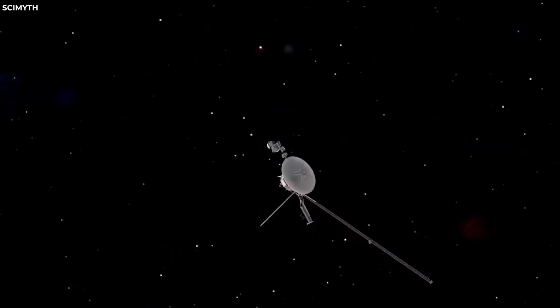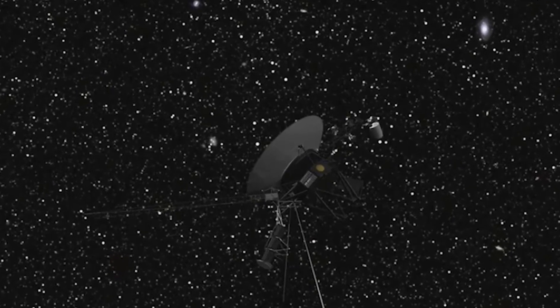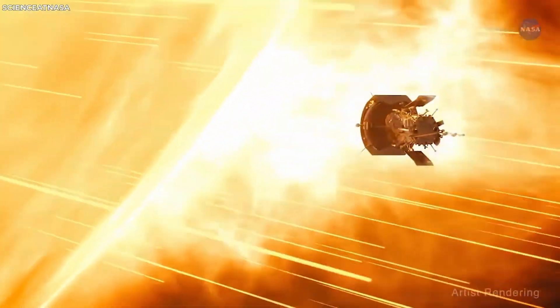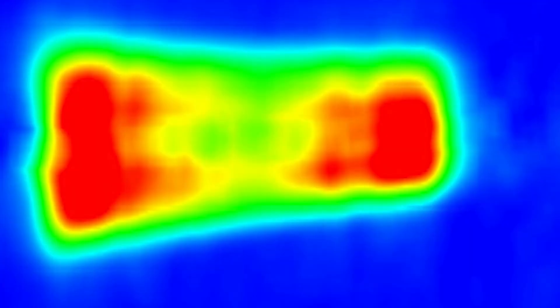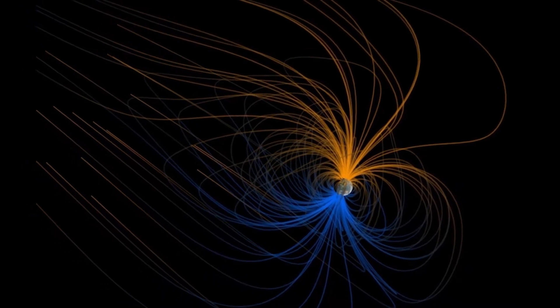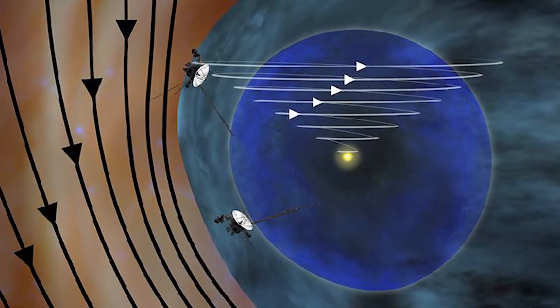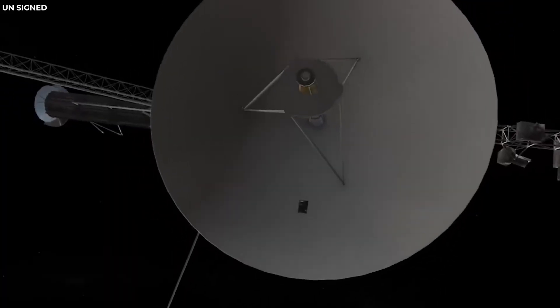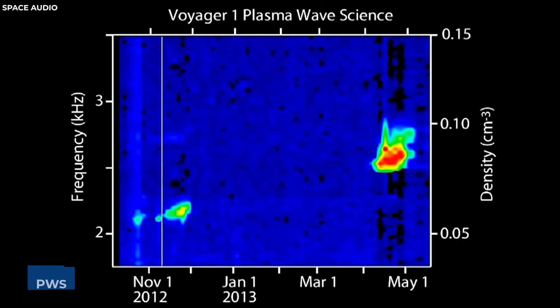However, this was not conclusive evidence of entering interstellar space because there could be other factors that affect the solar wind density. The third and final clue came in August 2012, when Voyager 1 detected a dramatic change in plasma density and magnetic field direction. Plasma is a gas of charged particles that can carry electric currents and generate magnetic fields. Voyager 1 measured plasma density using its Plasma Wave Instrument, or PWS.